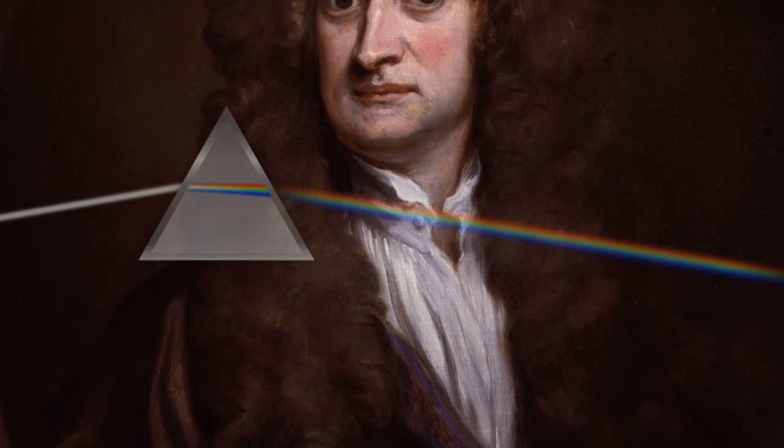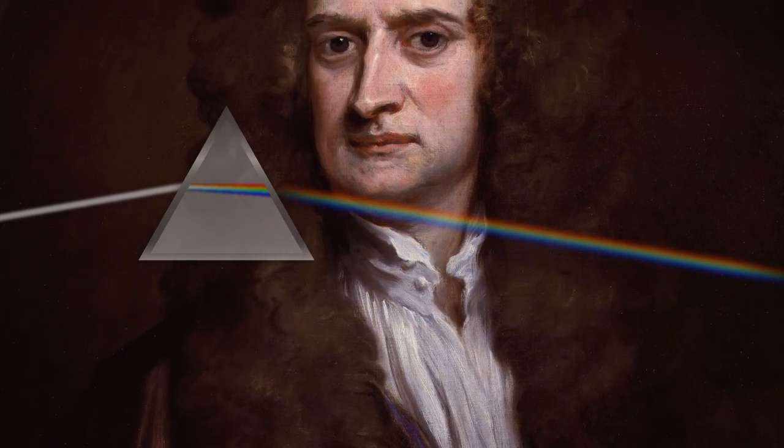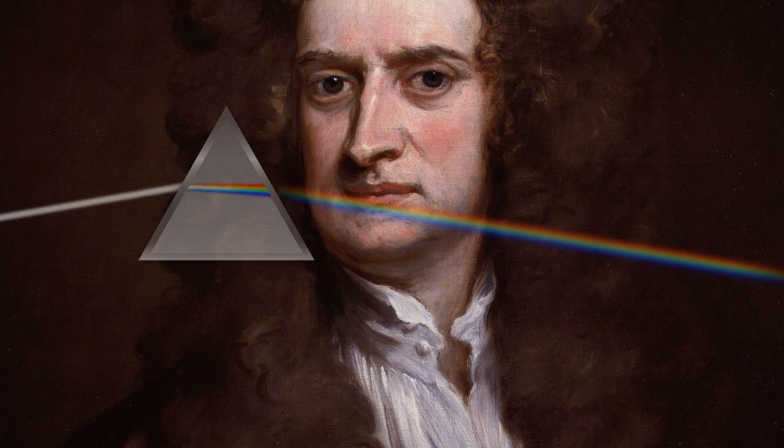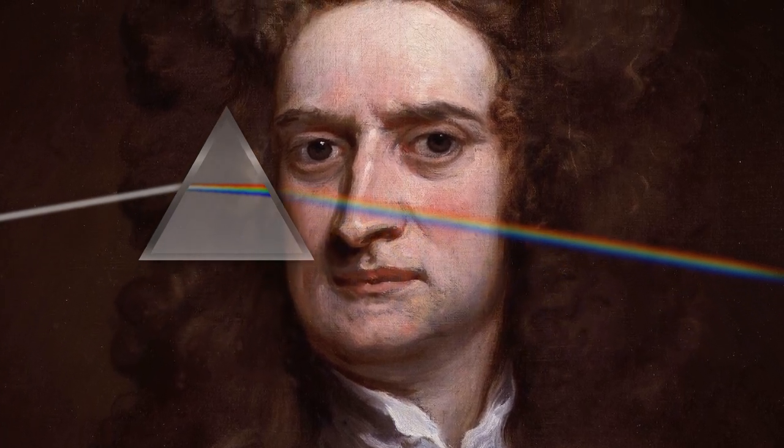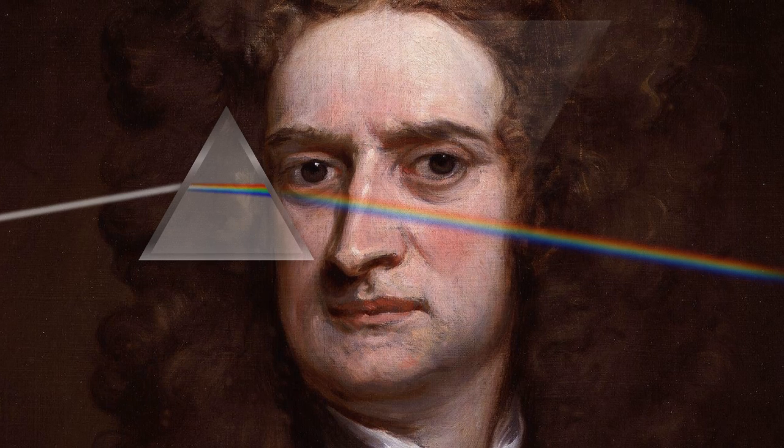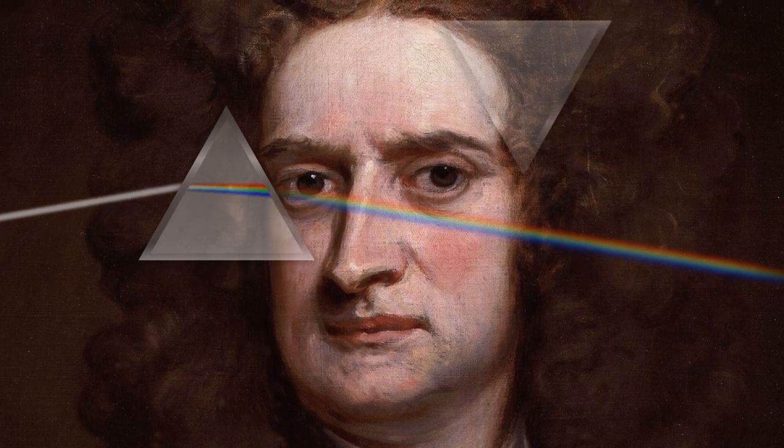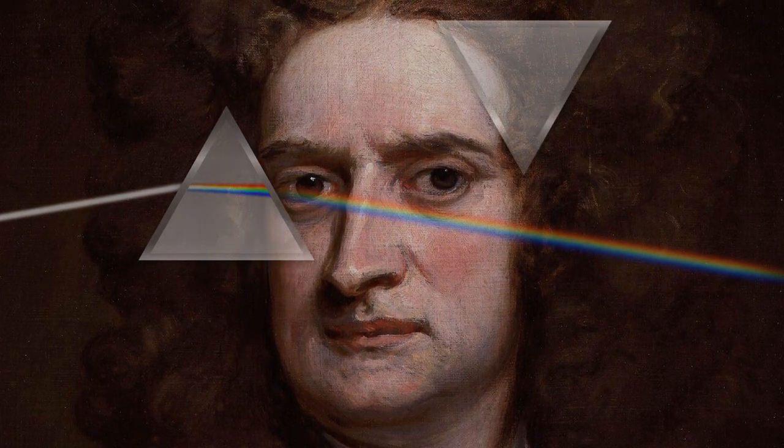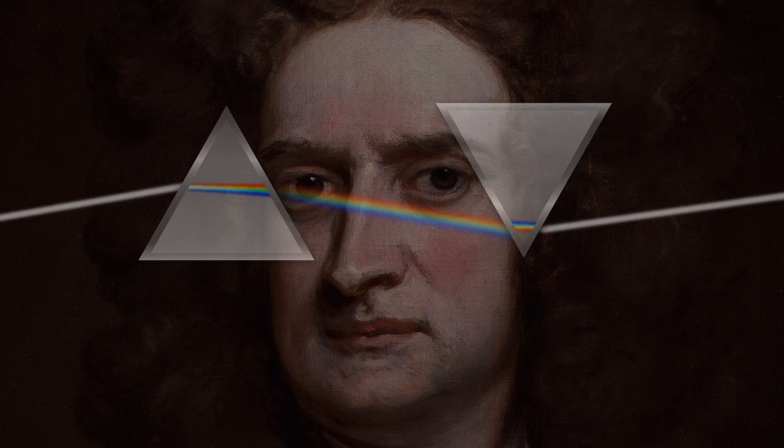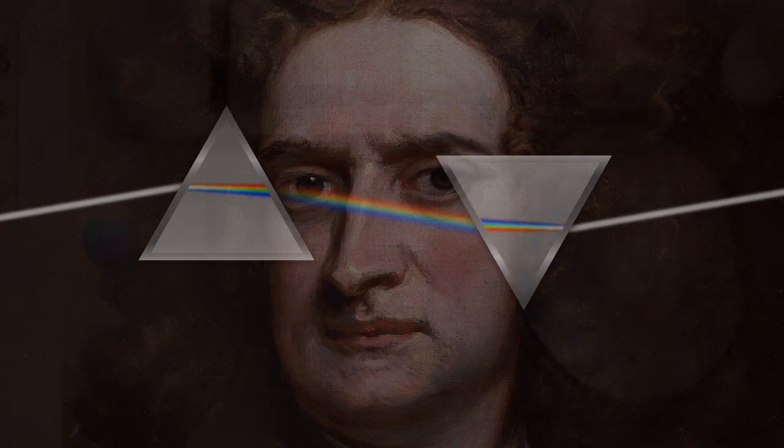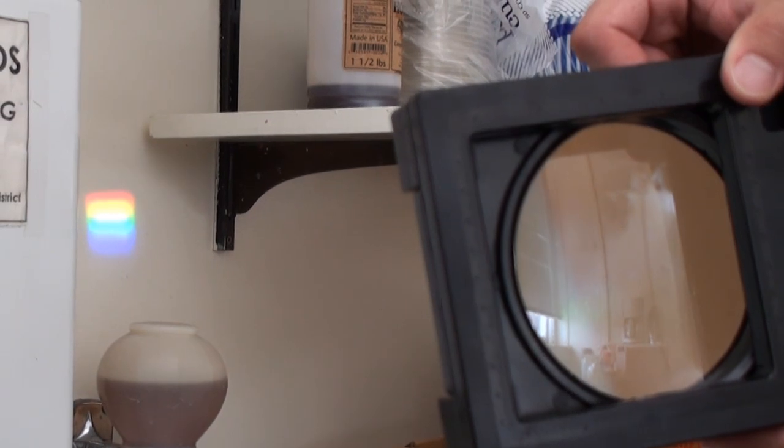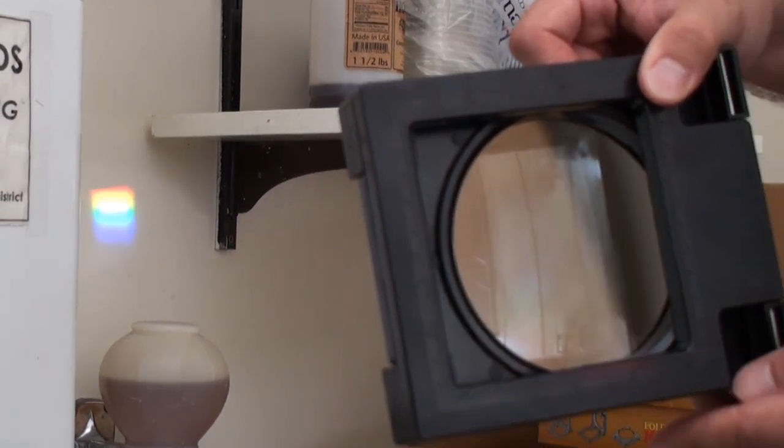However, in the 1600s, Isaac Newton passed a colored beam of light through a second prism. If the prism added colors, then even more colors should be present in the beam. Instead, Newton showed that the colors recombined into white light. This indicated that white light is compiled of all the colors of light.